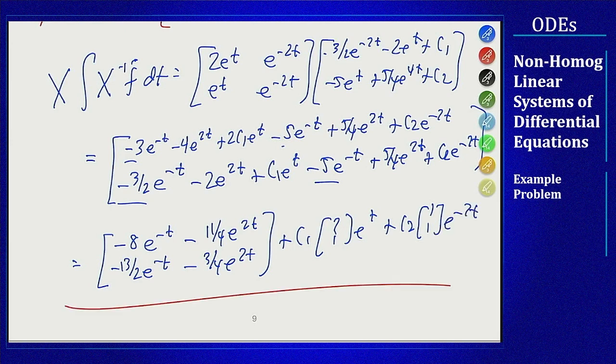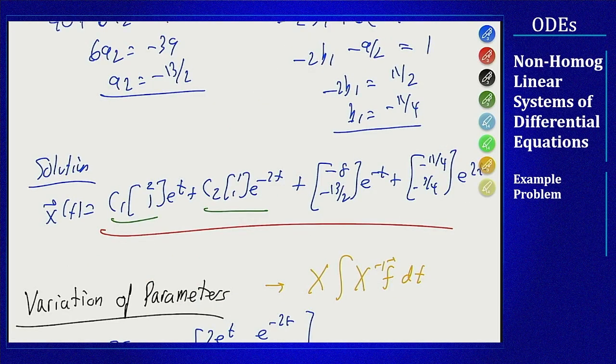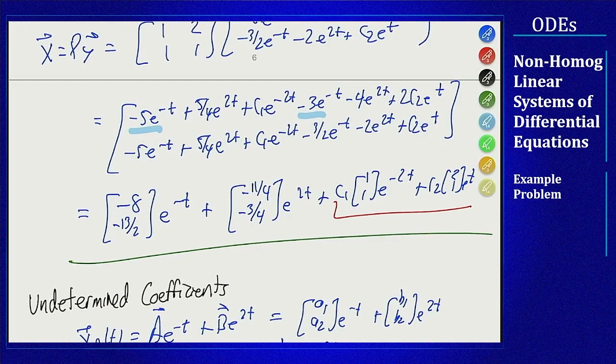Now we compare all three answers. Diagonalization, undetermined coefficients, and variation of parameters all yield the same four particular-solution coefficients: -8, -13/2, -11/4, and -3/4. Different methods, different routes, different choices — but they all arrive at the same answer. This demonstrates solving a non-homogeneous linear differential equation system via all three methods.